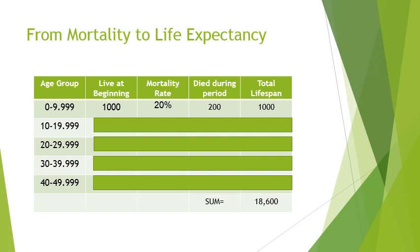That's 200 people who will die. The key to the life expectancy calculation is finding the total lifespan of all 200 people who died. We don't know exactly when they died within the 0 to 10 age category, so we assume the average age was the midpoint, which is 5. All 200 of them lived an average of 5 years. So 5 years times 200 people gives 1000 person-years total. That's a very important number for the life expectancy calculation.